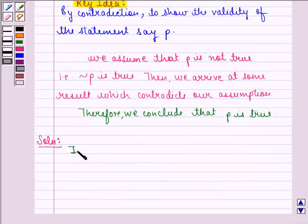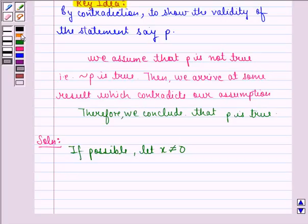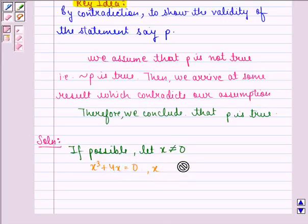If possible, first of all, let x be not equal to 0. Now we are given that x³ + 4x = 0 where x is a real number.